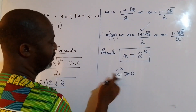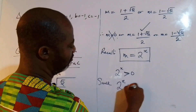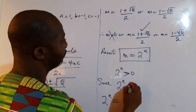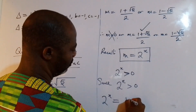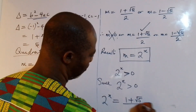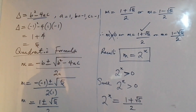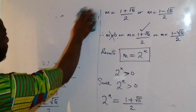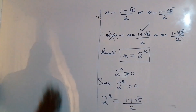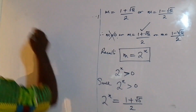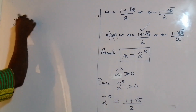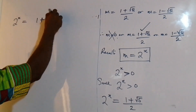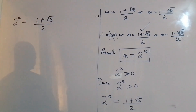Since 2 to the power of x must be greater than 0, we have 2 to the power of x equal to 1 plus root 5, all over 2. To solve for x, we take log base 10 of both sides, giving us log of 2 to the power of x, base 10, equal to log of 1 plus root 5 over 2, base 10.